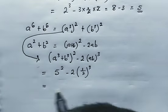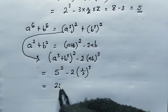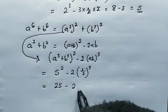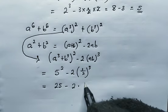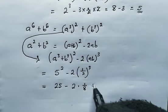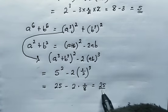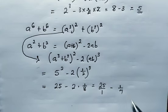So from here, this equals 5 squared, which is 25 minus 2 times, this will be 1 over 8. This equals 25 all over 1 minus, that will be 1 over 4.